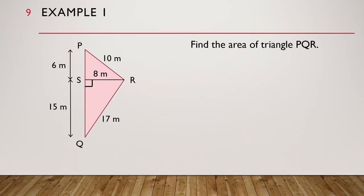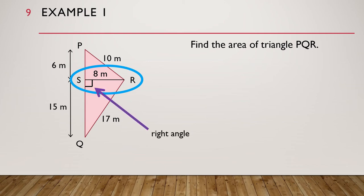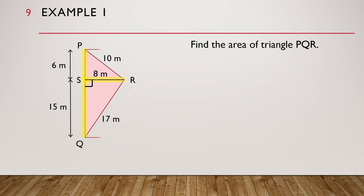Let's look at an example. The diagram shows a triangle PQR. Find the area of triangle PQR. Can you see the right angle in the triangle? Notice that the side PQ of the triangle is perpendicular to this line which starts from the other vertex R of the triangle. So these are the base and height of the triangle. We can draw the related rectangle of triangle PQR like this. PQ is the base of the triangle.